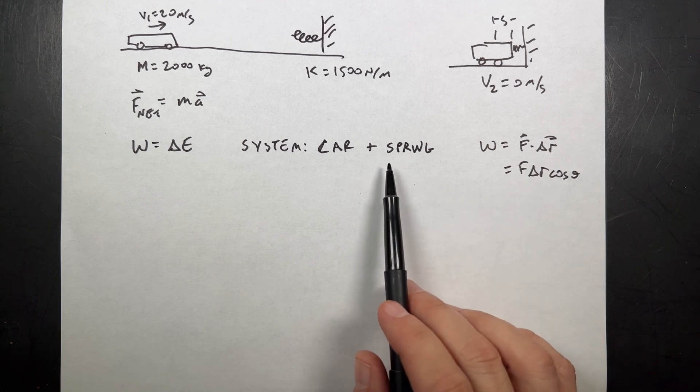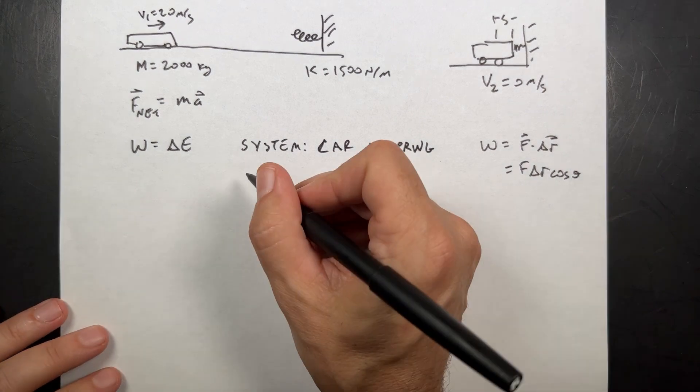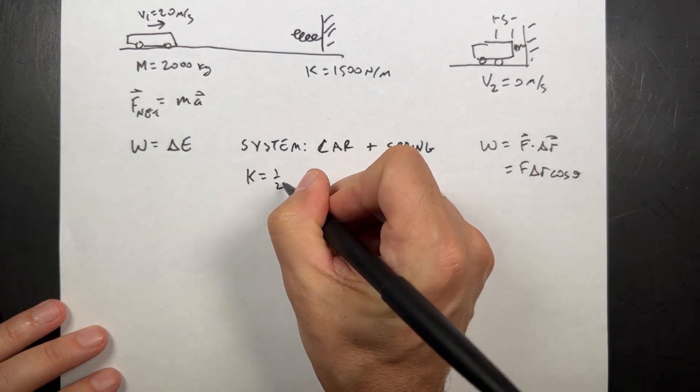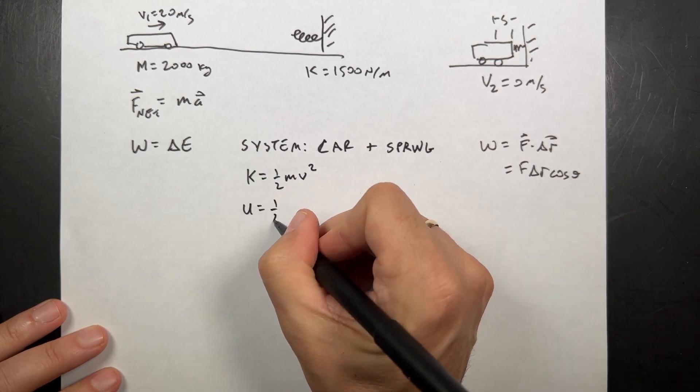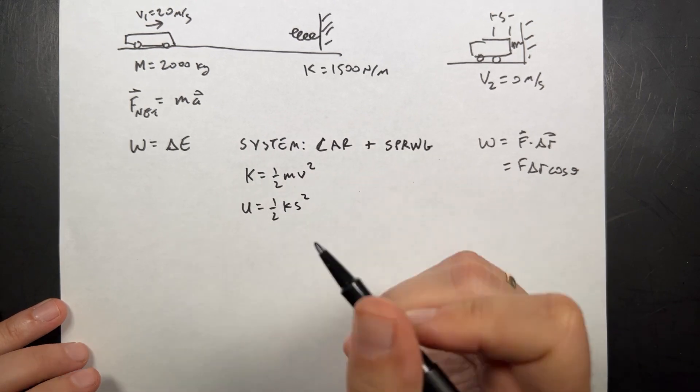But if I include the car and the spring in my system, then I can have two types of energy. I can have kinetic energy, one half mv squared, and I can have spring potential energy, one half k s squared. And,